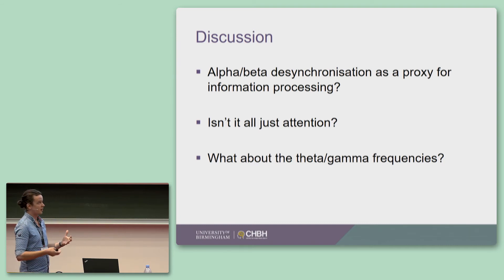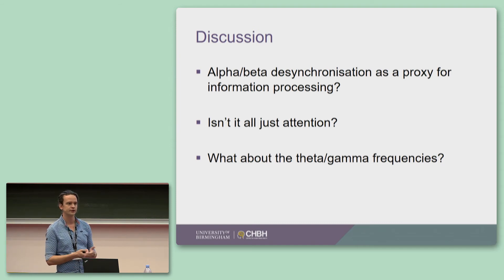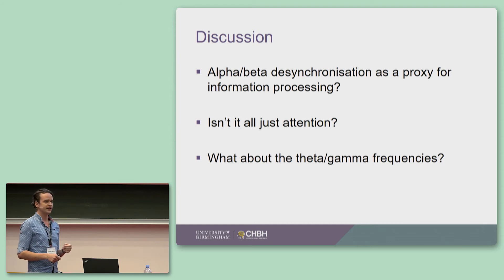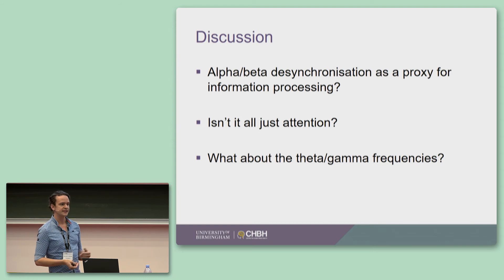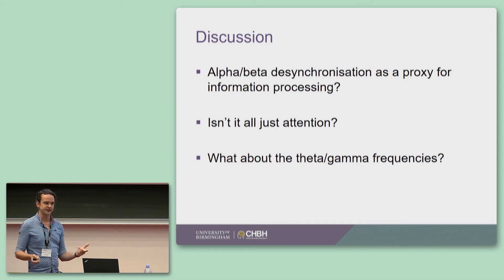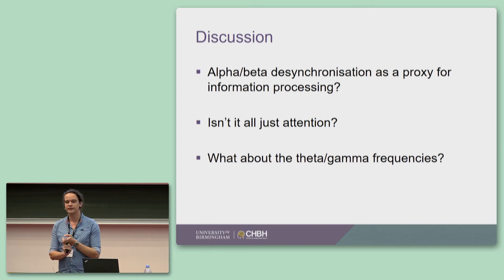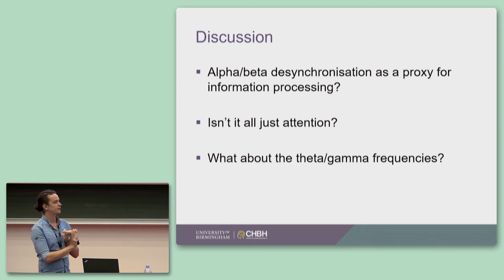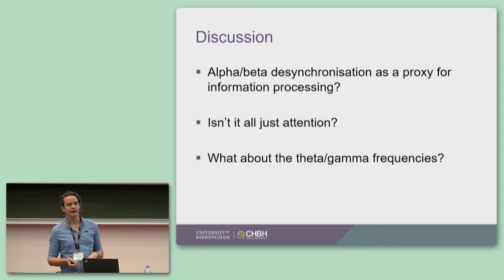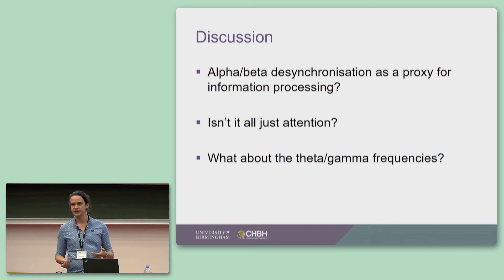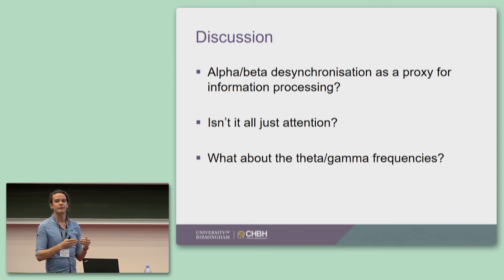I've focused solely on alpha and beta here, ignoring the slower theta oscillations and higher frequency gamma oscillations, both of which have also been related to information processing. I'm not going to say theta and gamma are not related to information processing — I think they are, but in a different manner. At the start of the talk I described two ways to represent information: either you boost the signal or you drop the noise. The work shown here suggests dropping background noise helps represent information. It could be that theta and gamma relate to boosting that signal — for instance, through the communication-via-coherence theory, where synchrony within the gamma band helps represent a stimulus.